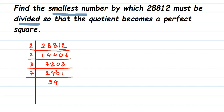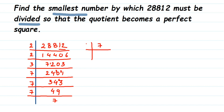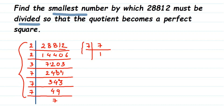Trying with 7: 7 fours are 28, remainder 2, then 7 threes are 21 — we get 343. And 343 again goes in the 7 times table. So 7 fours are 28, remainder 6, which makes 63, and 7 nines are 63. We get 49, which is a square of 7. So 7 sevens are 49, and we get 7 here. Now let me write down all the factors: 28812 = 2 × 2 × 3 × 7 × 7 × 7.